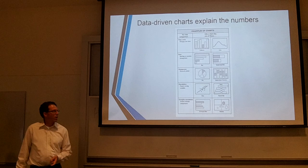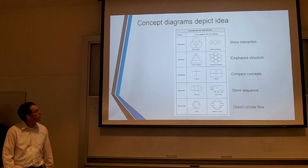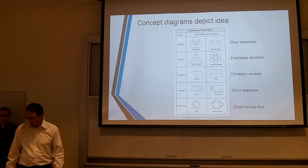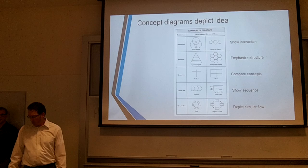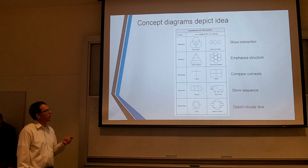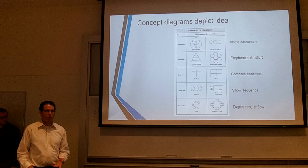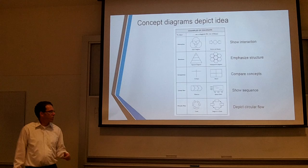Correlation shows a pattern among variables, and complex correlation involves multiple comparisons. Concept diagrams depict ideas — some diagrams illustrate relationships and show how items or ideas interact. Some diagrams highlight a sequence of steps, showing the steps in a process, the order of events, and repetition. Interaction diagrams show interaction between items. Structure diagrams emphasize structure, often seen in organizations. Comparison diagrams compare a couple of concepts. A linear flow shows a sequence of steps, and a circular flow shows a circular flow of events.